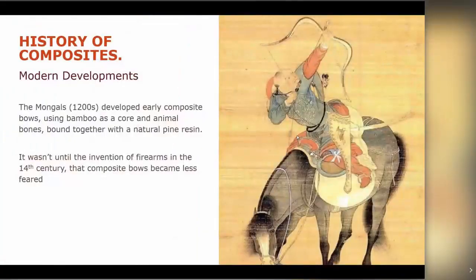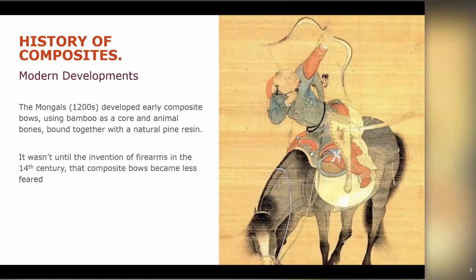Moving on from these early developments, there were also early examples of using composite materials in developing weapons. The Mongols used what is an early composite by combining bamboo and animal bones together, bound with resin, to create a material which was light and stiff, giving them the properties needed for bows to effectively hunt or fight.